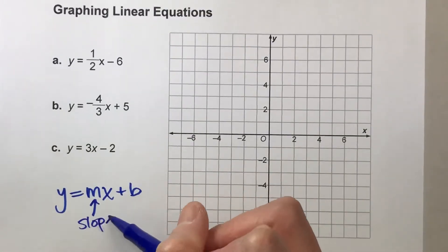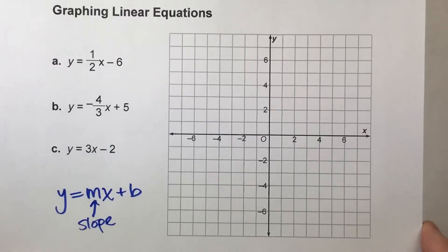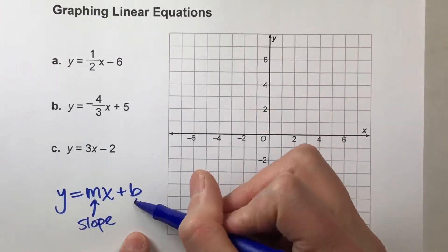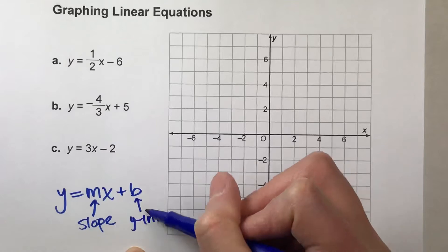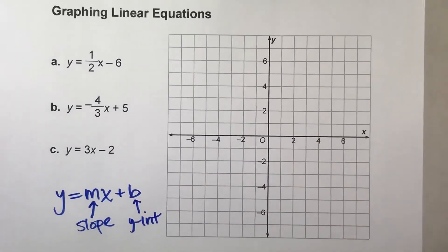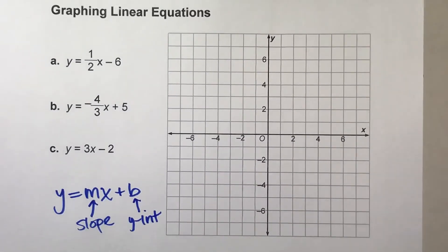is the slope, and it tells you the pattern of the points when you graph it. The b at the end here, that's your y-intercept. That tells you where the graph crosses the y-axis. These are all important things to look for when we make our graph today.